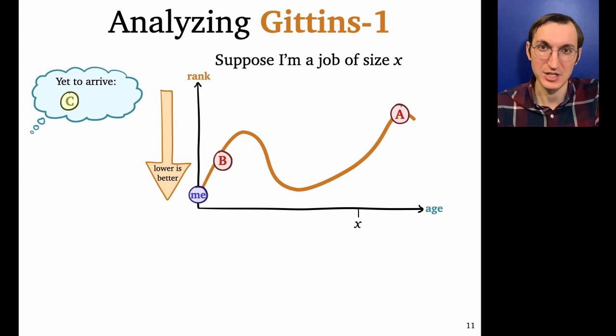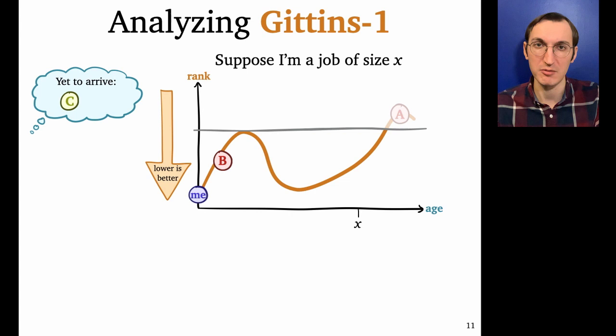To figure out my response time, I need to figure out how much do each of jobs A and B bother me. Let's start with A. So it turns out that in my whole time in the system, from age zero to age X, I never have rank worse than this gray line. I'm always at or below this gray line. A is already above this gray line, so I will always outrank A. So I can just pretend A doesn't exist. I can completely ignore it.